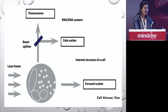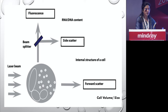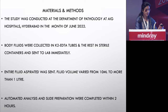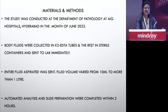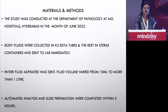To summarize, side scatter is based on nuclear details, forward scatter is based on cell size, and lateral fluorescence is the third component. These are the three parameters used by the analyzers. This study was conducted over one month — June 2022 — at Asian Institute of Gastroenterology's main branch, AIG Hospitals, Hyderabad. Body fluids were received in K2 EDTA tubes as well as sterile containers.